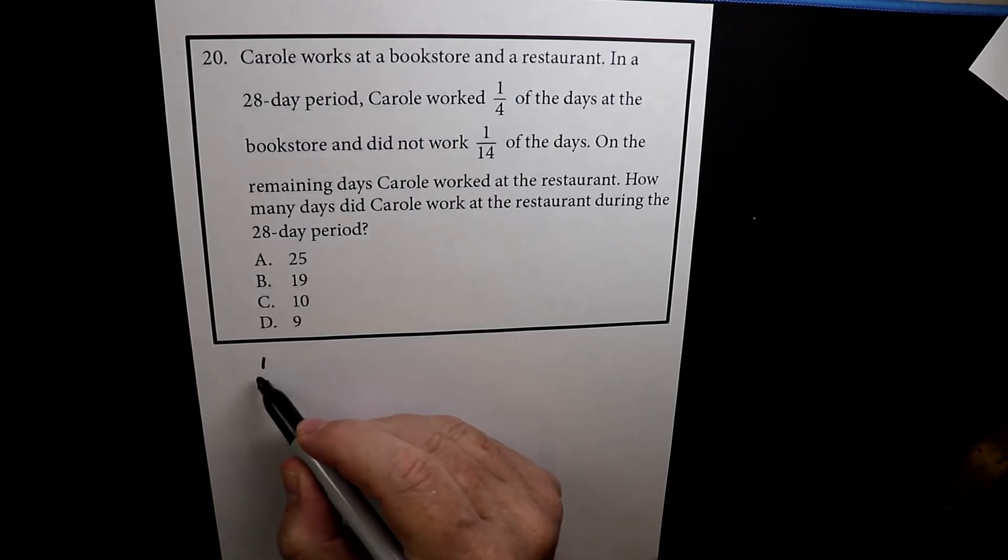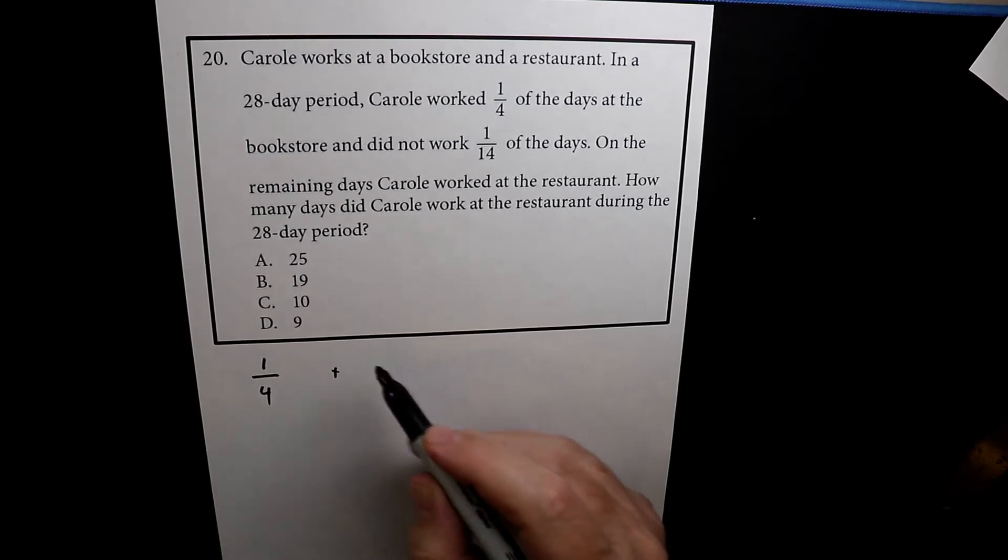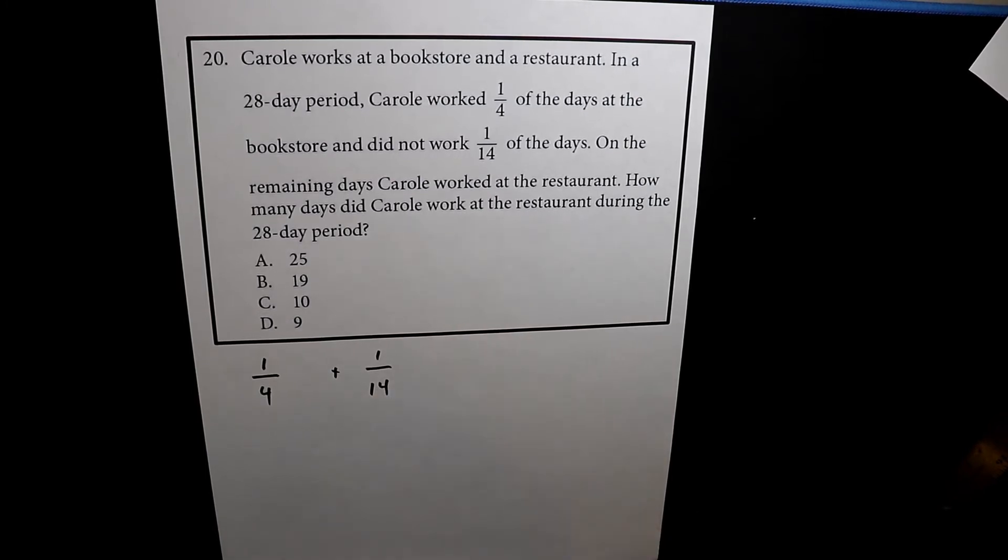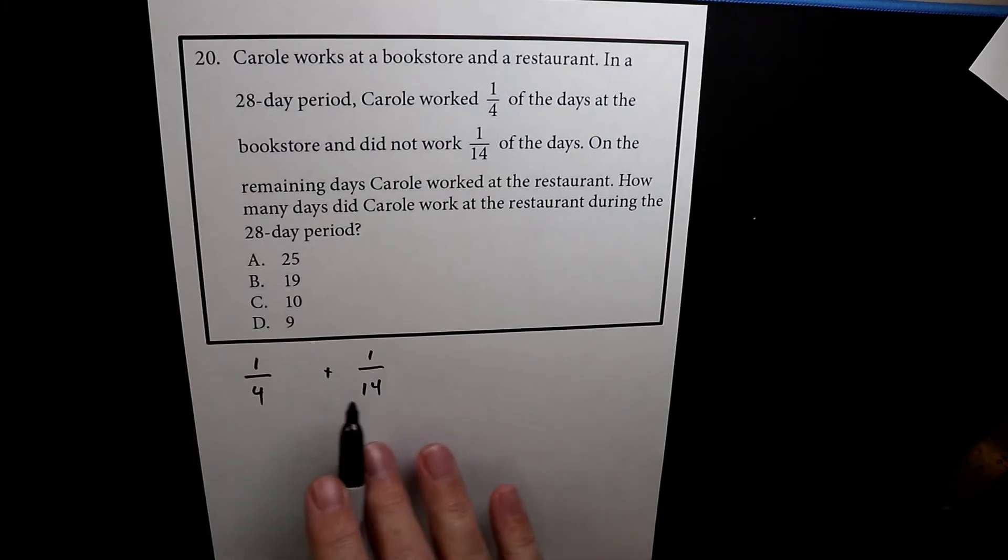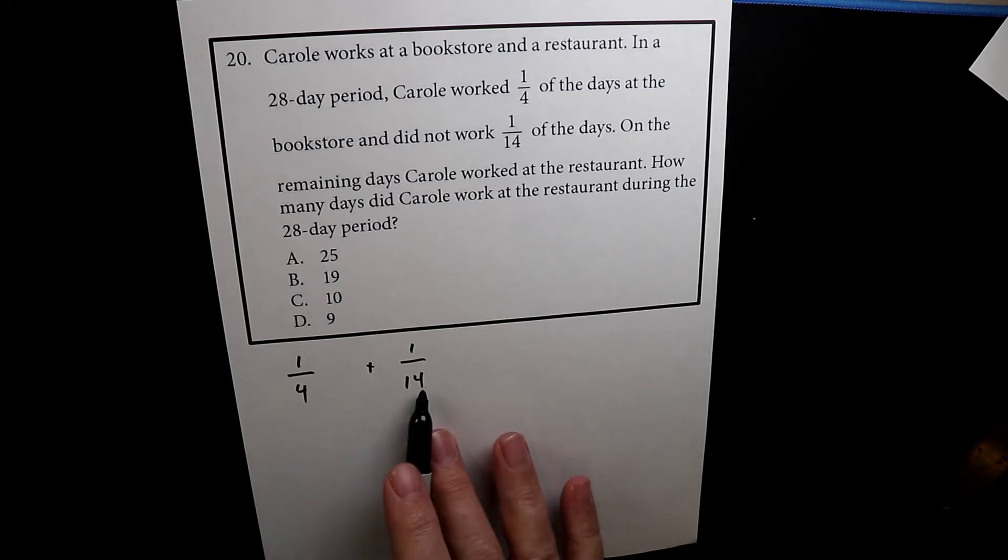We have one over four plus one over 14. Now, what we want to do here is we want to add those two fractions together first. If you notice, the denominator here is not the same.